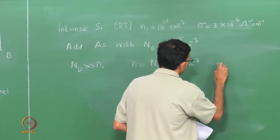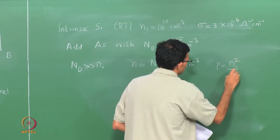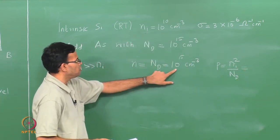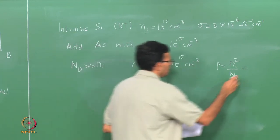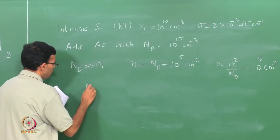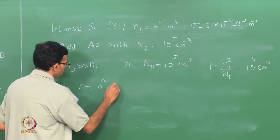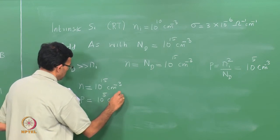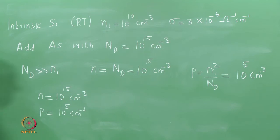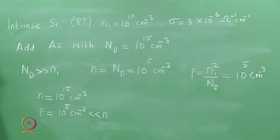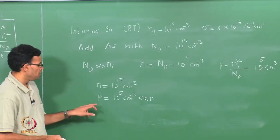The concentration of holes is Ni squared over Nd. Ni is 10 to the 10, so Ni squared is 10 to the 20; divided by Nd which is 10 to the 15, giving p equals 10 to the 5 per centimeter cube. So we have a concentration of electrons of 10 to the 15 and holes of 10 to the 5 — p is 10 orders of magnitude less than n. By doping silicon with arsenic we have preferentially increased the concentration of electrons by more than 10 orders of magnitude compared to holes.